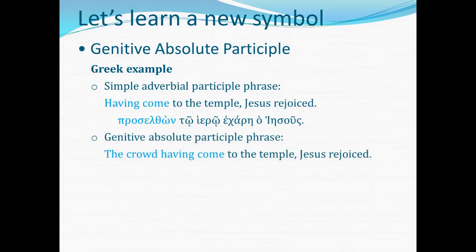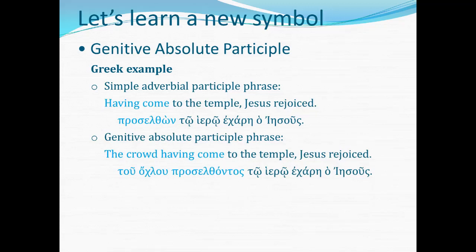What would a genitive absolute look like? 'The crowd having come to the temple, Jesus rejoiced.' Here's the crowd in the genitive case — tou ochlou — then the agreeing participle proselthontos. You may look at those last two letters and say that looks nominative, like anthrōpos — yes, it happens to have the same last two letters, but the whole ending is proselthontos: that -ontos ending is a third declension genitive singular ending. So tou ochlou proselthontos is the genitive absolute: 'the crowd having come to the temple, Jesus rejoiced.' For the simple adverbial participle, only the participle itself is in blue. For the genitive absolute, both the noun tou ochlou and its participle proselthontos are shown in blue to keep a narrow focus on the central components of the construction.